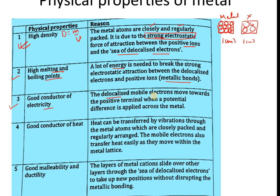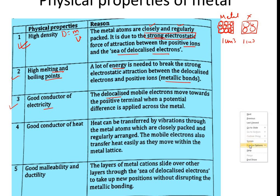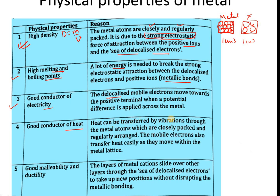Metals are good conductors of electricity because the delocalized, mobile electrons move towards the positive terminal whenever a potential difference is applied across the metal. Metals are also good conductors of heat by two mechanisms: first, because the atoms are closely and regularly packed, they can vibrate and transfer energy to neighboring atoms; second, the mobile electrons can also transfer heat energy directly. Both mechanisms contribute to high thermal conductivity.